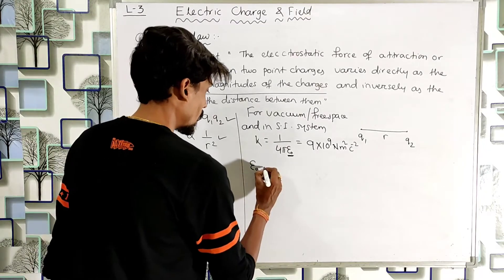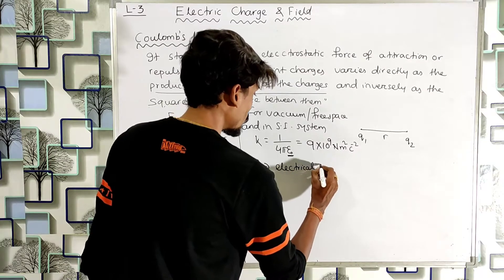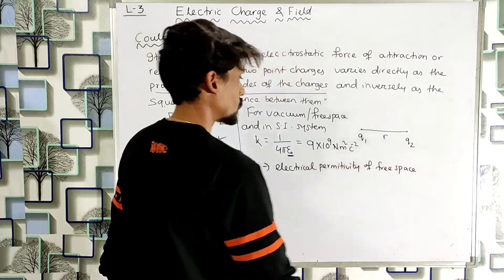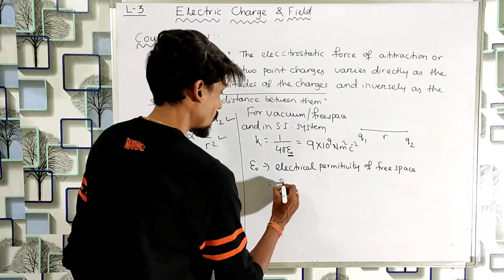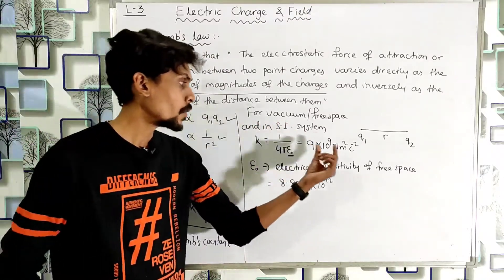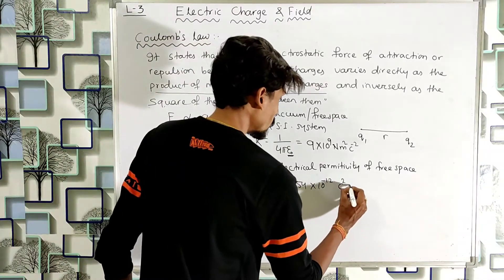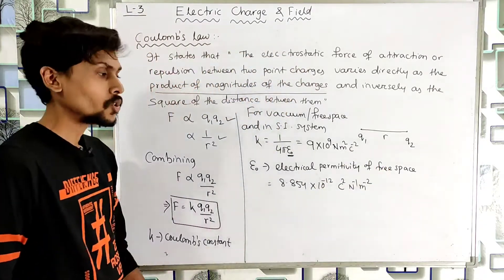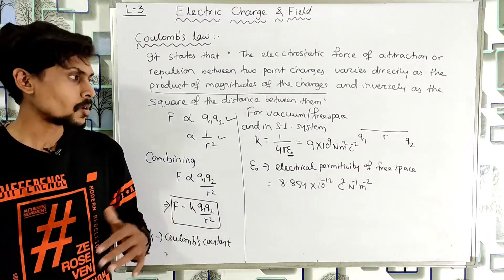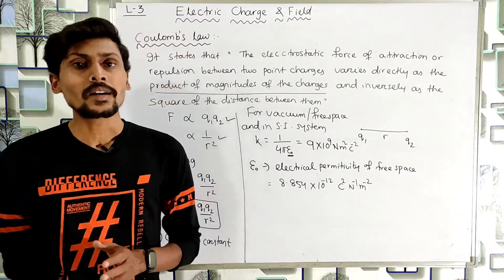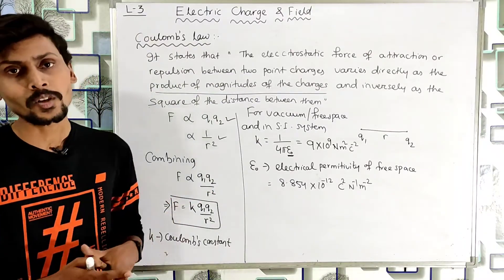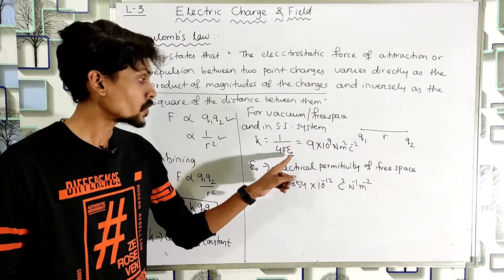The term ε₀ is the electrical permittivity of free space, with value 8.854 × 10⁻¹² C²·N⁻¹·m⁻². This ε₀ is specifically used for vacuum. If the medium between the two point charges is vacuum or free space, you write k = 1/(4πε₀). The value of the electrical permittivity varies from medium to medium; for glass, water, or any other medium the value of epsilon changes, and consequently the value of k changes.